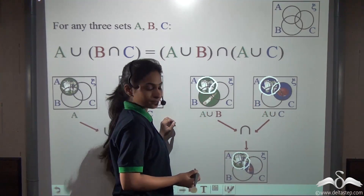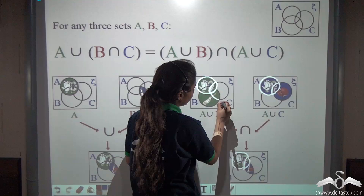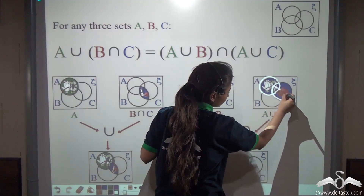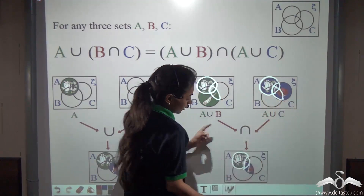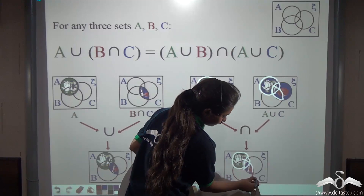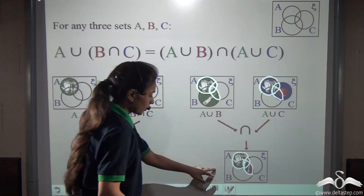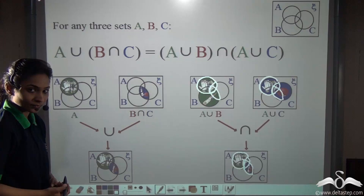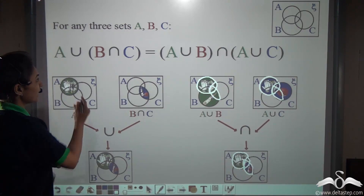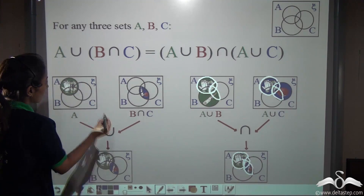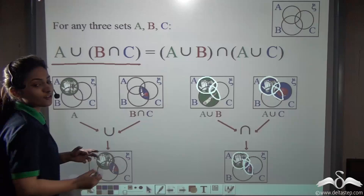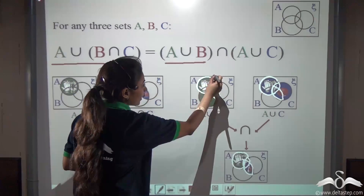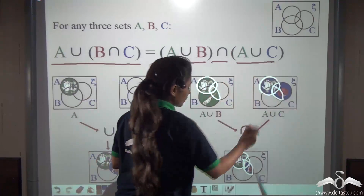One more thing — this part is also drawn here. Can you see this and this are the same? So you can say that A union (B intersection C) will give you the same answer as (A union B) intersection (A union C).